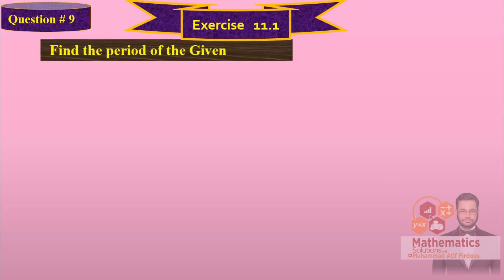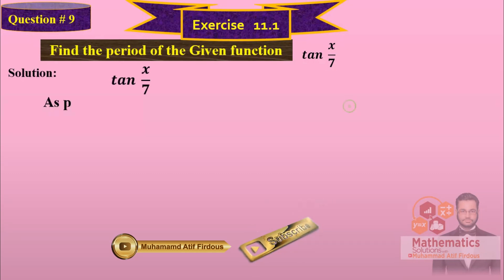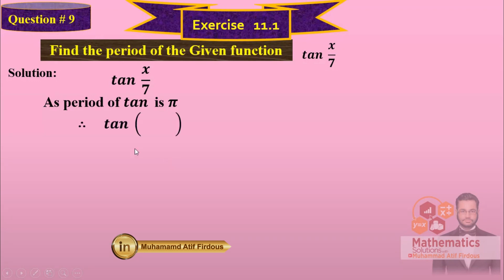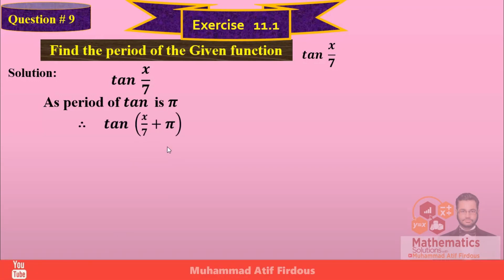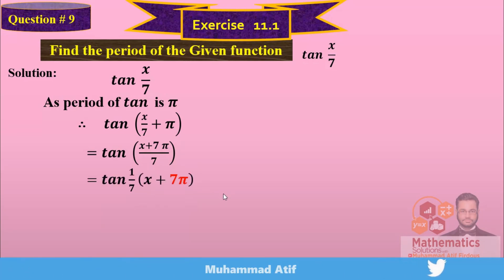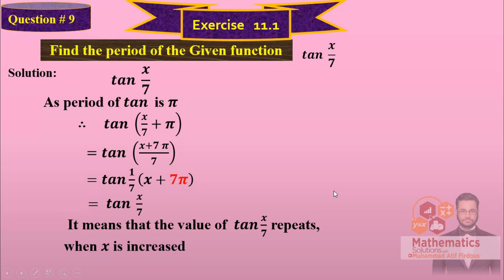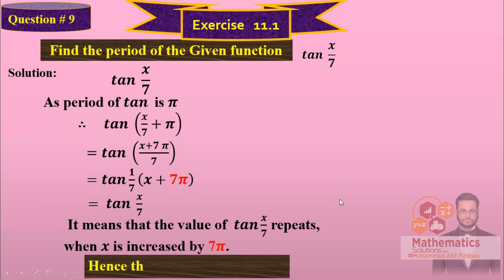Question number 9: find the period of the given function tan(x/7). The period of tangent is pi, so we add pi in the angle. To make the coefficient of x equal to 1, take LCM of 7: 7 times pi gives 7 pi. It means the value of tan(x/7) repeats when x is increased by 7 pi. Hence the period of tan(x/7) is 7 pi.